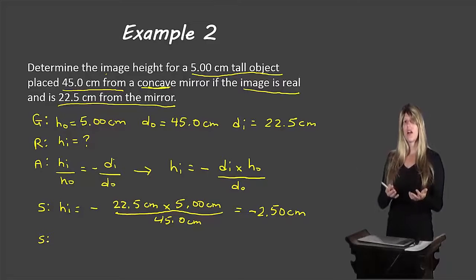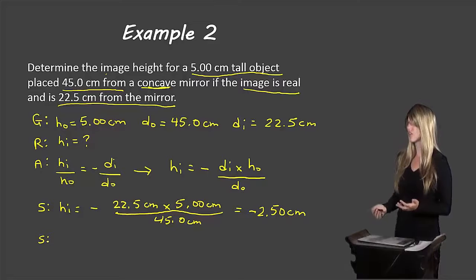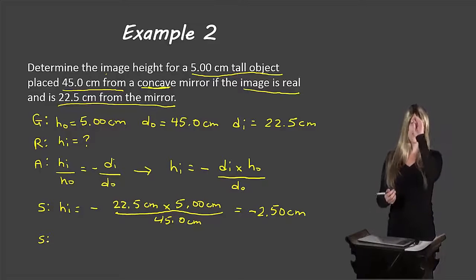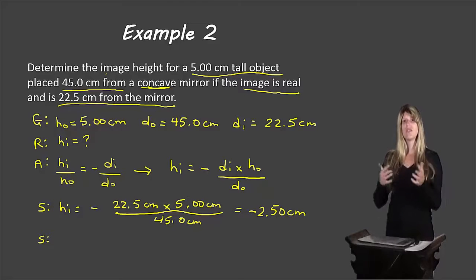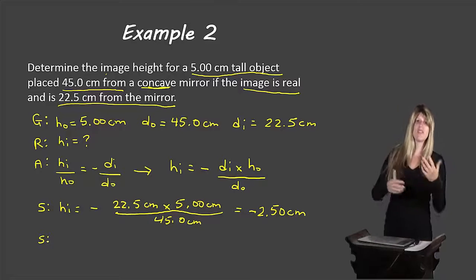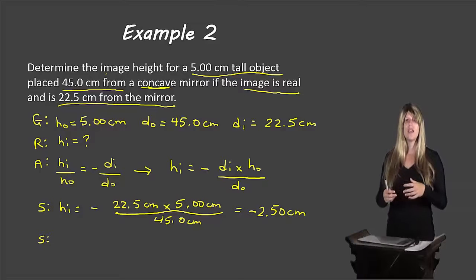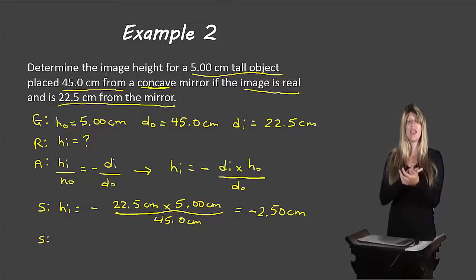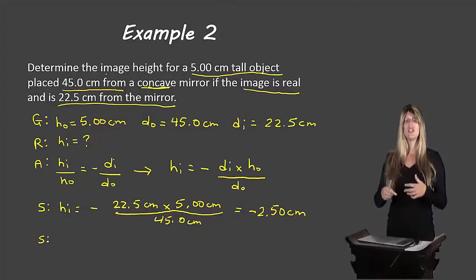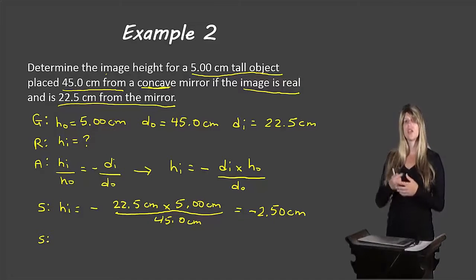So we have the correct sign for our answer. Those positive and negative signs only give us information about whether it's concave or convex, inverted or upright, real or virtual. It doesn't mean that if we took a ruler it would somehow give us a negative reading.